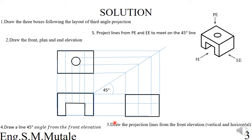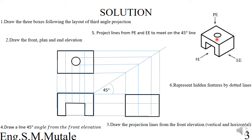Step six is to represent hidden features by dotted lines. If you view the front elevation from here, there is a hole — it's there but you can't see it, so it is represented by dotted lines. The same applies to the end elevation and the plan view. On the plan view, certain points extend that way and that way — when viewed from the top you won't see them, but since they're there you represent them with dotted lines. This is the solution to the 3D object in third angle projection.